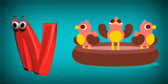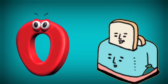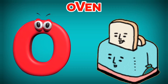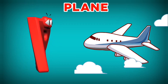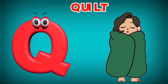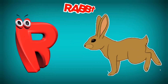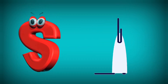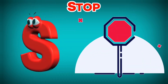N is for Nest. N, N. Nest. O is for Oven. O, O. Oven. P is for Plain. P, P. Plain. Q is for Quilt. Qu, Qu. Quilt. R is for Rabbit. R, R. Rabbit. S is for Stop. S, S. Stop.